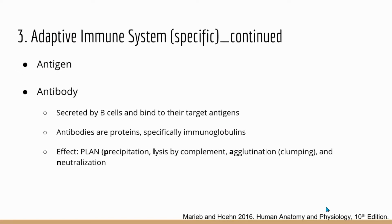I want to introduce a couple of terms. The first one is antigen. Antigens are substances that can stimulate our adaptive defenses — they are the targets of all adaptive immune responses. Antigens could be whole bacteria cells or protein structures on the surface of a virus. Anything that can mobilize the adaptive defense can be considered an antigen.